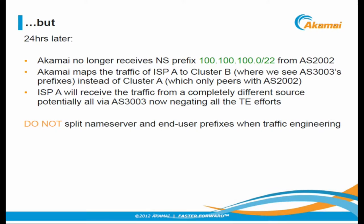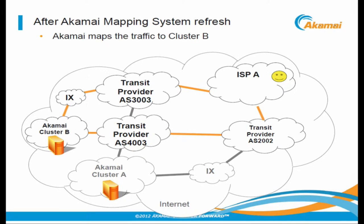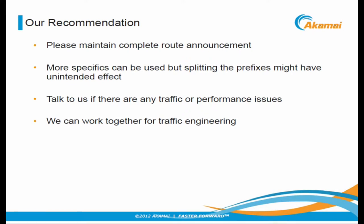24 hours later, Akamai is no longer receiving the name server prefix from 2002. Akamai maps traffic off ISPA to cluster B where we see 3003's prefixes instead of cluster A, which only appears with 2002. ISPA will receive traffic from a completely different source, potentially via AS3003, negating all traffic engineering efforts. Our recommendation: always announce complete routes to us everywhere. More specifics can be used, but splitting prefixes may have undesirable effects.